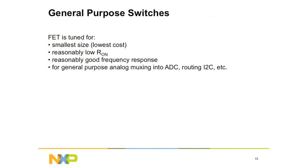The first one is the general purpose switch — just like it sounds. They're not too fast, not too slow, not too expensive, not too inexpensive. They fit right in the middle and are good for average applications. The FET inside has been tuned for the smallest size — the lowest cost — with reasonably good resistance and reasonably good frequency response. So they're good for general purpose, and they're very popular. They do a lot of things very well.